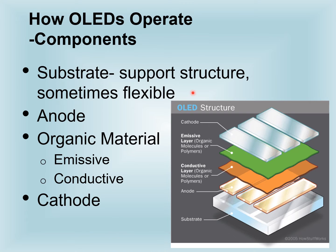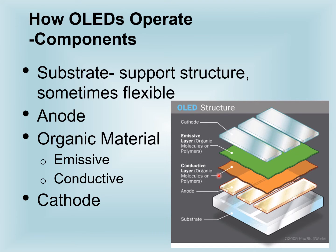Now let us analyze the structure of OLEDs. You can see the substrate level at the bottom of the structure, which gives the support of the structure and sometimes it will be very flexible. There you can see the anode, cathode, and organic materials which are sandwiched in between the anode and cathode — the green-colored layer and the gray-colored or brown-colored layer. These are the emissive and conductive layers.